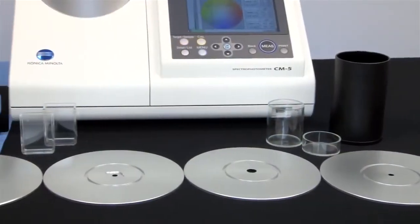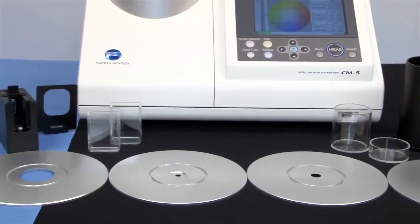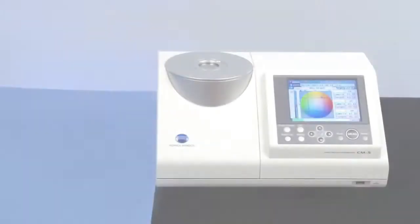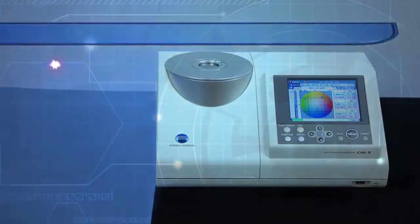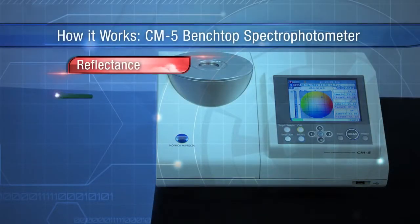A variety of functions and accessories set this innovative spectrophotometer apart. With the versatile CM5, you can measure reflectance or transmittance.